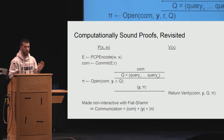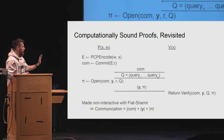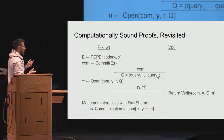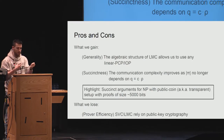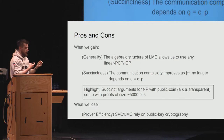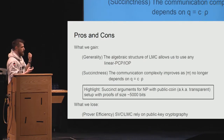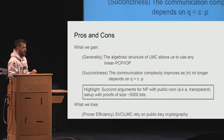This is most of the time made non-interactive using the Fiat-Shamir heuristic. The communication complexity of the protocol is really the size of the commitment plus the size of the openings and the size of the proof. What do we gain by instantiating the commitment using a sub-vector commitment or linear map commitment? First, generality: the algebraic structure of linear map commitments allows us to compute even linear functions and give succinct proofs for that. So we can support a larger class of PCPs, namely linear PCPs and interactive oracle proofs.